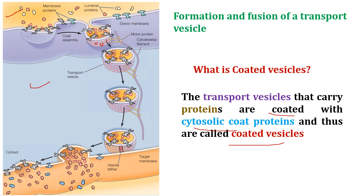The assembly of coat proteins drives the budding of vesicles containing selective cargo proteins from the donor membrane. The vesicle then travels along motor proteins and cytoskeleton filaments to its target — for example, from the ER to the Golgi, or from the Golgi to the late endosome, then to the lysosome. Another route is from the trans-Golgi to the endosome.